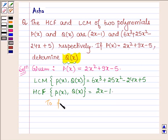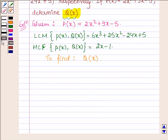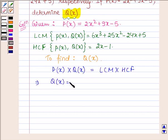We have to find the polynomial Q(x). We know that the product of polynomials P(x) and Q(x) equals the product of their LCM and HCF. So this implies Q(x) equals LCM times HCF divided by P(x).